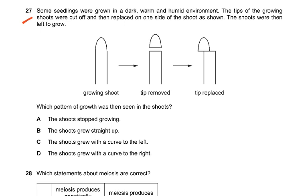Question 27. Some seedlings are grown in a dark, warm, and humid environment. The tips of the growing shoots were cut and then replaced on one side of the shoot. Which pattern of growth was then seen? Auxin is produced by the tip, and if there is a lot of auxin diffusing in from one side, there is going to be more cell elongation on that side. So the shoots grew with a curve to the right.